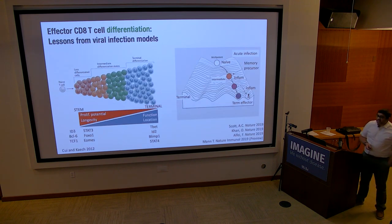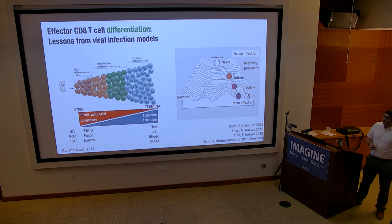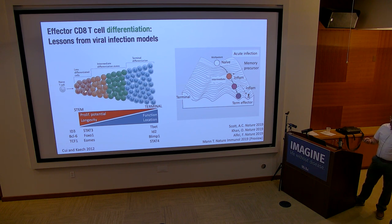We're trying to understand how this process works. Going back to what I started working on as a grad student — which will be relevant for today's talk — we were quite interested in how you make a memory T cell. The idea was that a naive T cell gives rise to a heterogeneous pool of effector cells. Some would be very terminally differentiated and shorter-lived; others would retain proliferative potential and memory potential, and those cells would preferentially go on to form memory T cells.